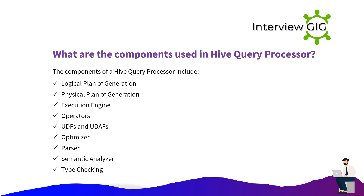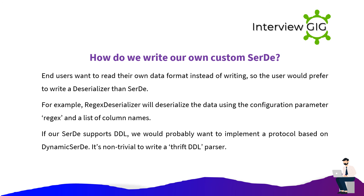What are the components used in Hive Query Processor? The components of a Hive Query Processor include: Logical Plan Generation, Physical Plan Generation, Execution Engine, Operators, UDFs, Optimizer, Parser, Semantic Analyzer, and Type Checking.